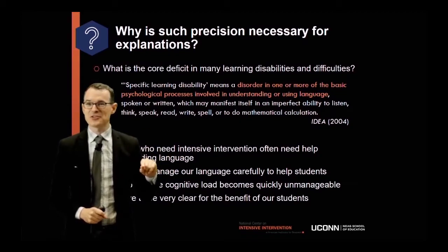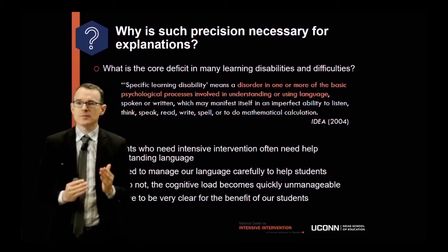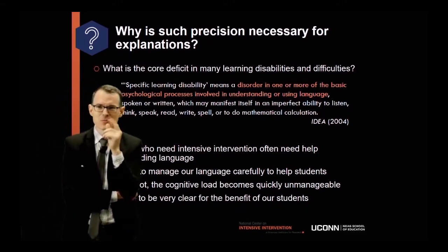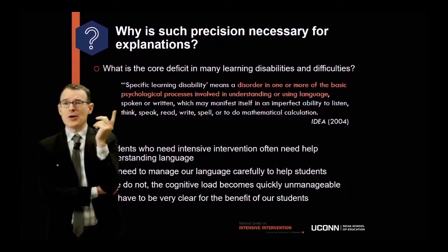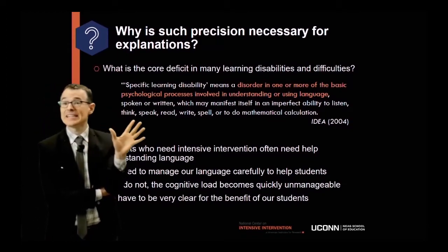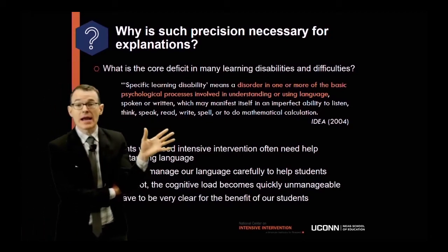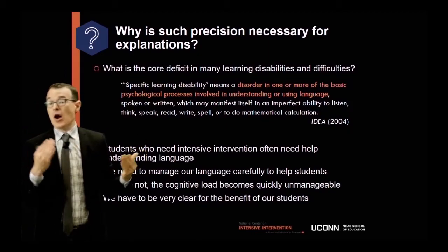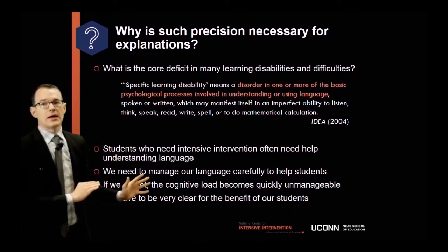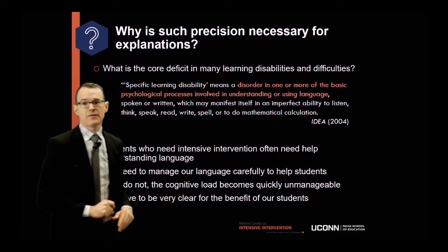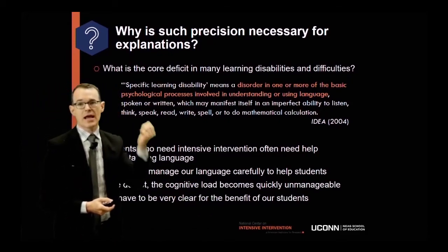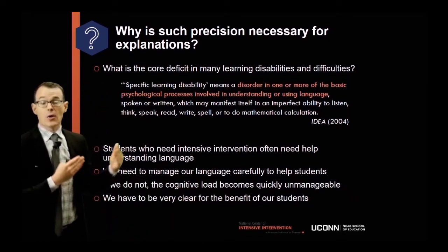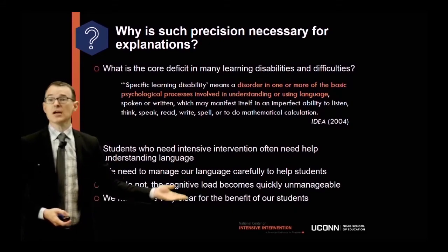Think back to lessons where I was figuring things out as I was teaching — like, what do I want them to know about SQ3R? I hadn't done a good job planning. I didn't write out a clear explanation, which put all the cognitive load on the students to figure out what I hadn't even figured out. We need to be very clear to benefit students. What I'm going to talk about now is how to create a precise, clear explanation that will lower the cognitive load for students who have intensive intervention needs and for whom language is really challenging.